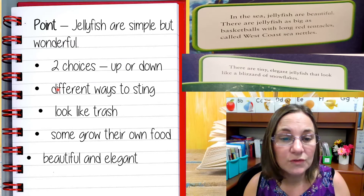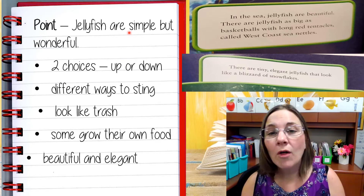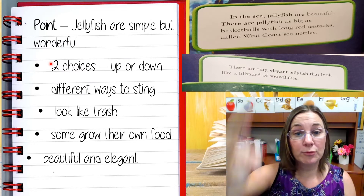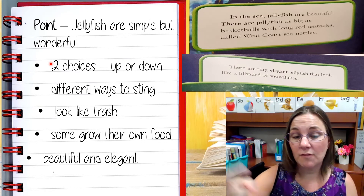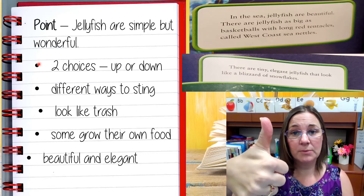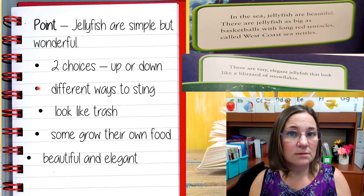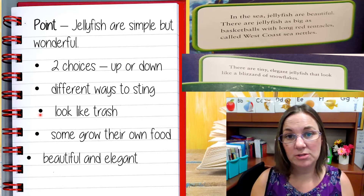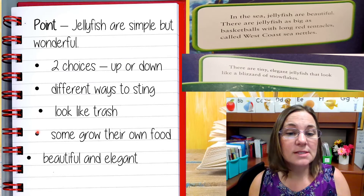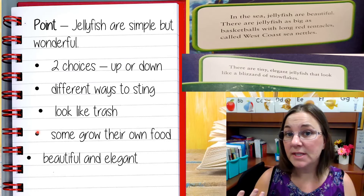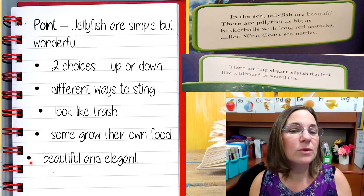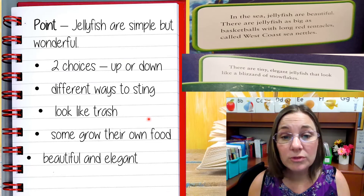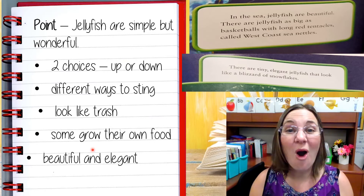Now that I've gone back into the text and looked for reasons and jotted them down in my notebook, I want to make sure all the reasons I wrote support the point that jellyfish are simple but wonderful. They have two choices — go up or down. Does that prove they're simple? Yes, it does. They have different ways to sting — simple or wonderful? I think they're pretty wonderful. They look like trash — shows they're simple. Some grow their own food — I think that's pretty wonderful too. Beautiful and elegant — does that show they're wonderful? It does. Look at all these reasons the author gives to prove that jellyfish are simple but wonderful. They support their point with all of these reasons.